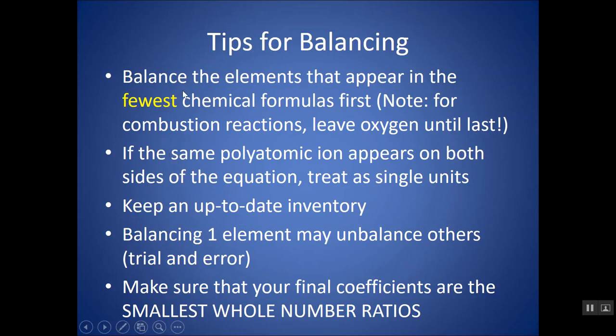Let's look at a few examples, and we'll be using some of these tips. Just make sure at the end that your final coefficients are the smallest whole number ratio. So if you get something like 2, 2, 2, 2, make sure you simplify to 1, 1, 1, 1. And you don't have to write the ones in. It is implied there's a 1.